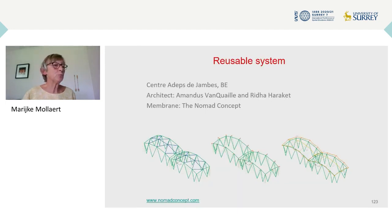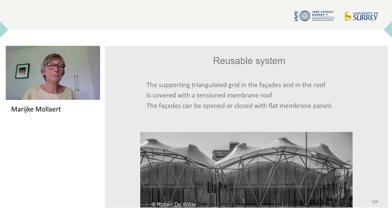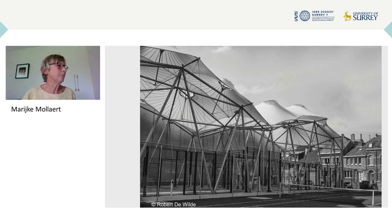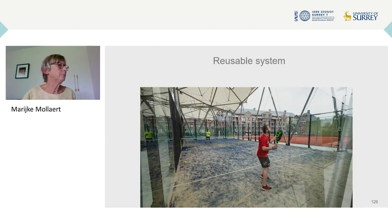A reusable structural system can support beauty. A cover for two panel fields was created at the ADEPT Centre in Jambe. The structure is a triangulated grid for both the roof and the facettes. Overhanging struts are held in position by tie-down cables and the membrane roof. Floating mass creates curvature in the roof. The supporting triangulated grid is covered with a tensioned membrane roof, but for the facettes, they can open and close with flat membrane panels. The roof allows people to enjoy playing paddle, covered but still with the impression of being outside.